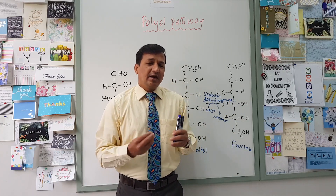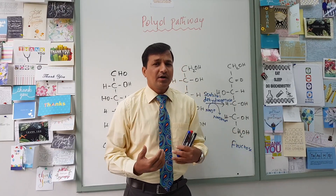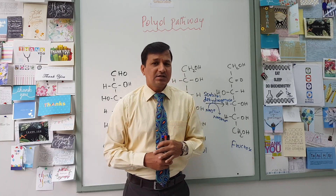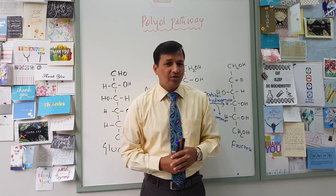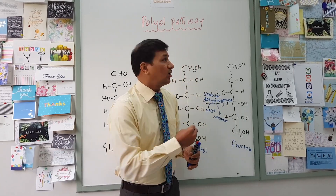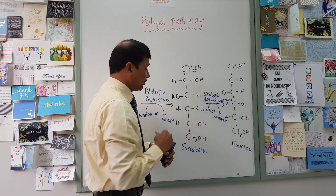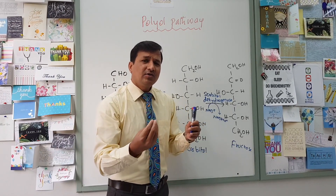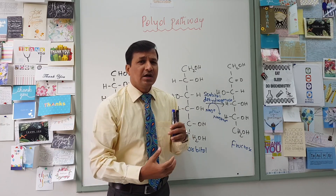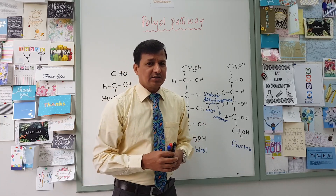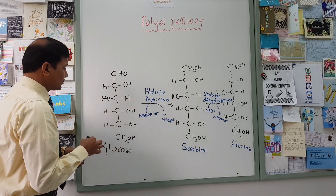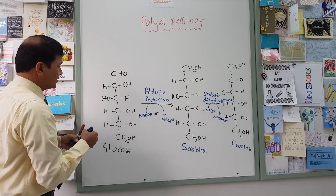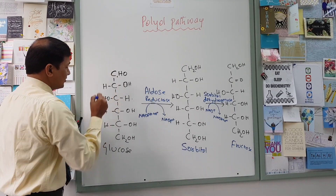These insulin-independent cells allow more and more glucose in, and one fate of that excess glucose is to go into a pathway called the polyol pathway. To understand this, we need a little background on the structure of glucose. Glucose is an aldose sugar — it has an aldehyde group at its first carbon, which is the functional carbon, and all other carbons have hydroxyl groups.